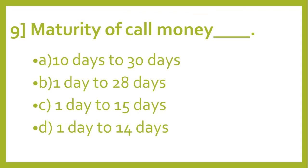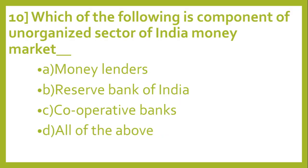Question number 9: Maturity of call money? Option A: 10 days to 30 days. Option B: 1 day to 28 days. Option C: 1 day to 15 days. Option D: 1 day to 14 days. And the answer is D, 1 day to 14 days.